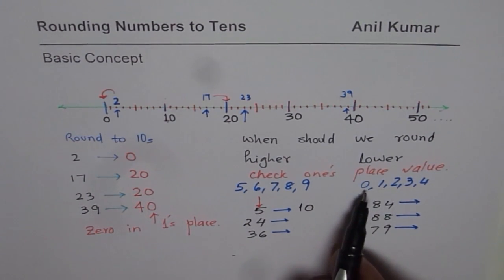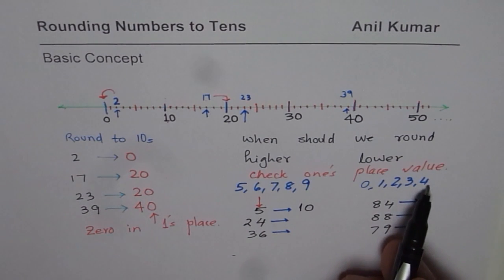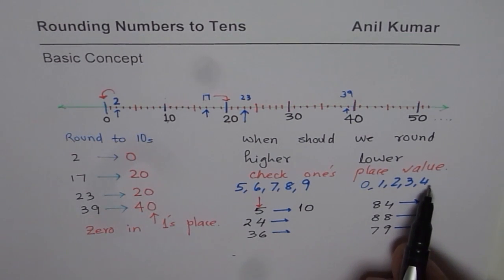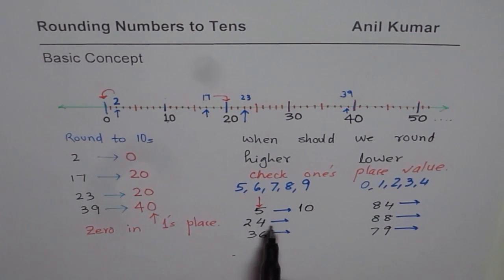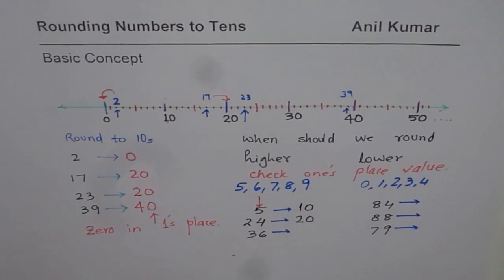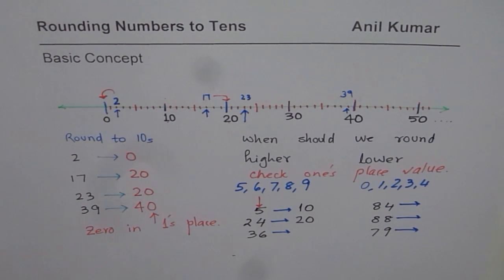24. This 4 is in this group: 0, 1, 2, 3, 4. So if 1's place has a number which is less than 5, then it is rounded lower. So that rounds to 20. You can pause the video, round these numbers and check with my answer.